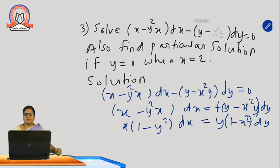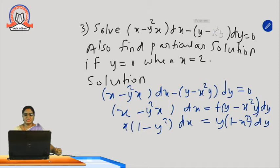Solve: x minus y² x dx minus (y minus x² y) dy equal to 0. We also want to find the particular solution if y equal to 0 when x equal to 2. By the separable method, we are grouping x variables on one side and y variables on the other side.